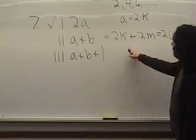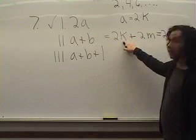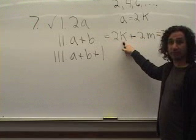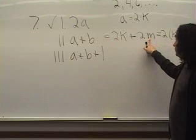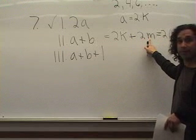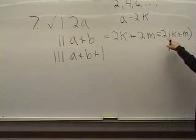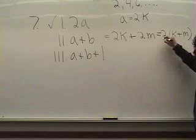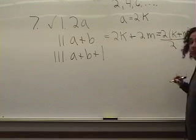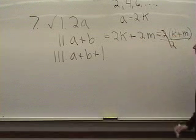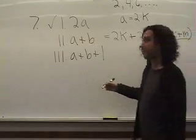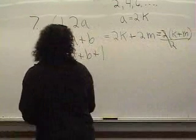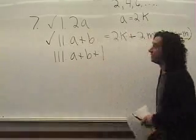where K could be 1, 2, 3, 4, for example. Maybe M is 1, 2, 3, 4, maybe 7, maybe 20. Then we have 2 times K plus M, and you got it. This guy is also divisible by 2. So that must mean that A plus B is also even.